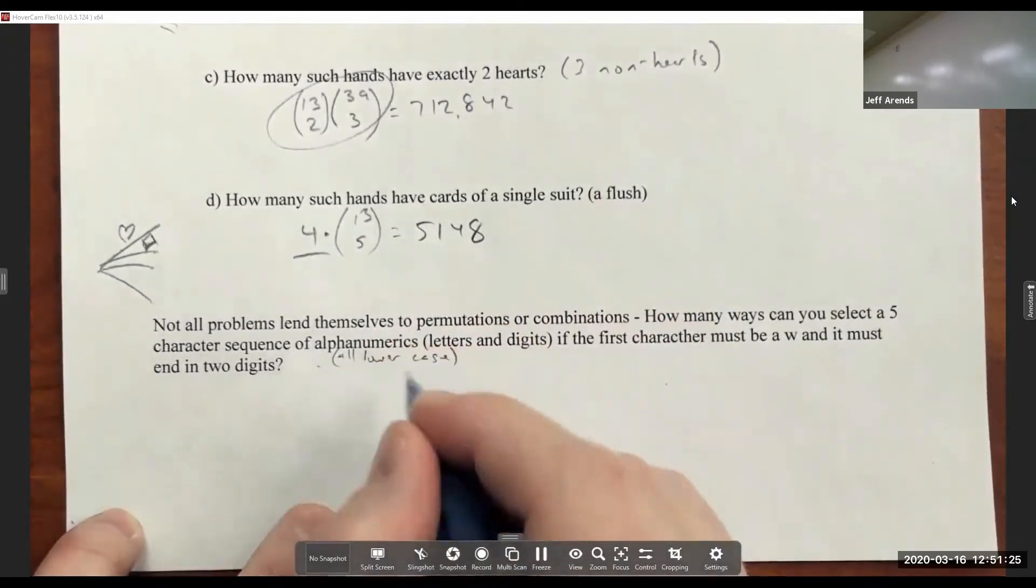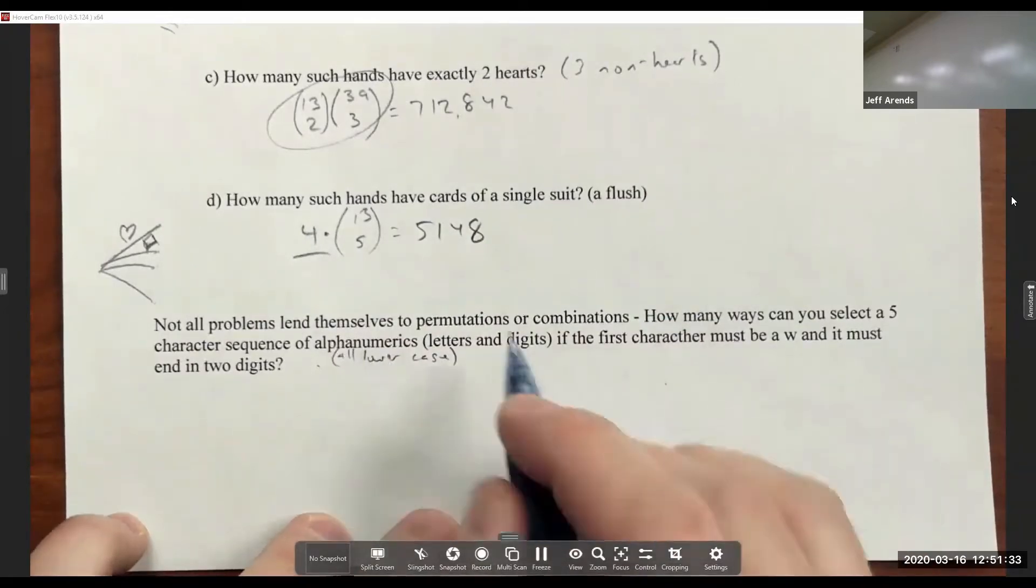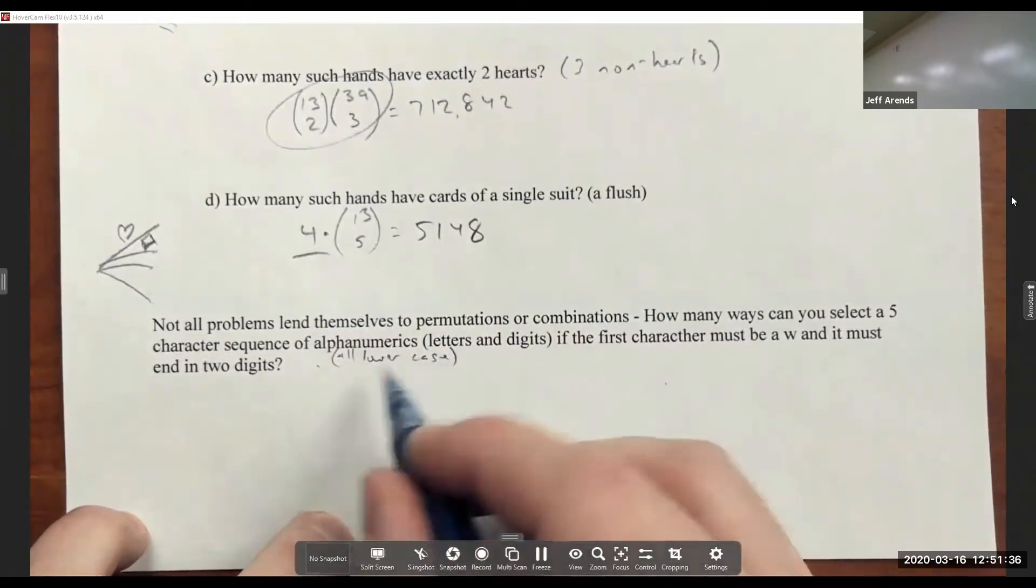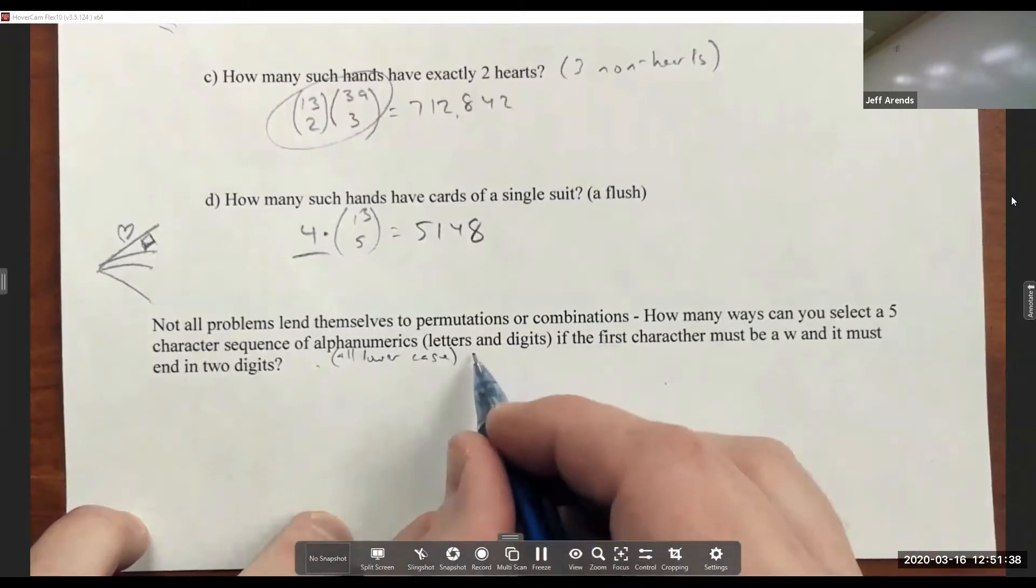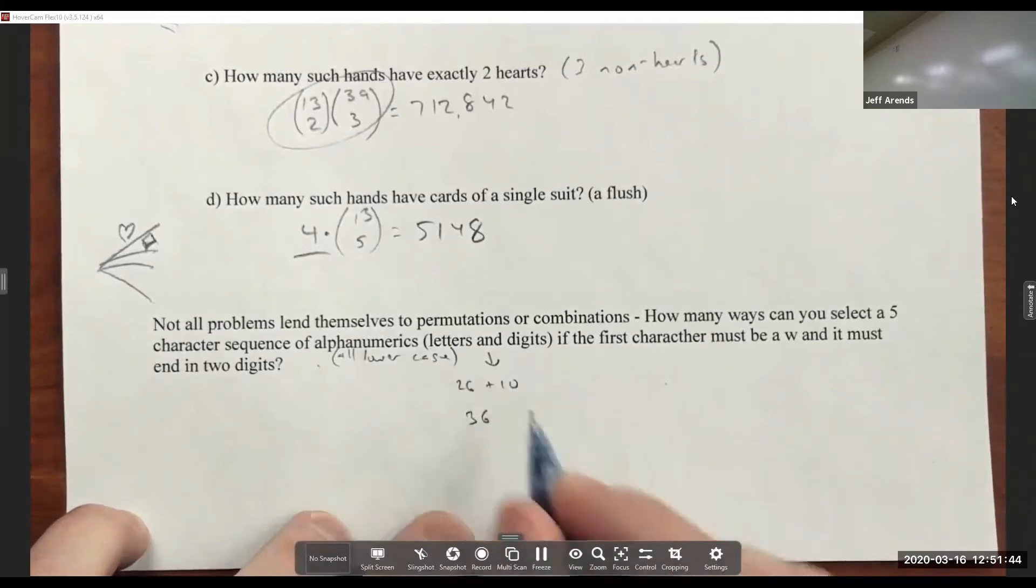If you're talking about passwords or something like that, you would probably consider uppercase letters separately from lowercase letters. But we're just going to say alphanumerics, all lowercase. So letters and digits. There are 26 letters and 10 digits, so that means there'd be 36 choices for each of these.